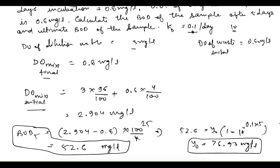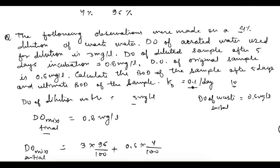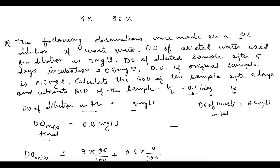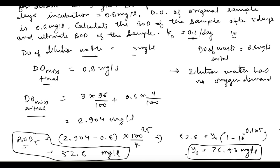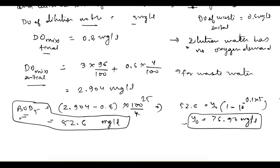One important point to note: here, the DO of dilution water is given, but we are assuming that this dilution water has no oxygen demand. Only then will the calculated BOD5 or ultimate BOD be for the wastewater alone. Otherwise, if the dilution water also has an oxygen demand, then the calculated BOD will be for the mix — meaning BOD of waste plus BOD of dilution water.